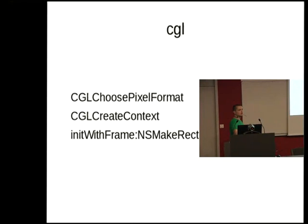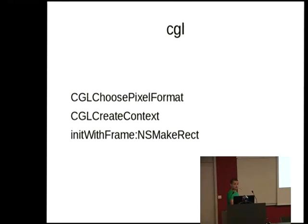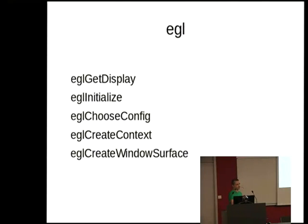CGL, as perhaps you know, is the Apple or Mac version. As you can see, they went a bit shorter — you just choose your pixel format and create your context. And with this lovely Objective-C function, apparently you make some rectangle which somehow relates to the window, which, thank God, I'm not doing. Moving to EGL: being embedded, it does require a bit more setup. I believe with EGL 1.4 you may have an extra function. It roughly boils down to the same workflow as GLX — get your display, get your configs, your context, and your window.